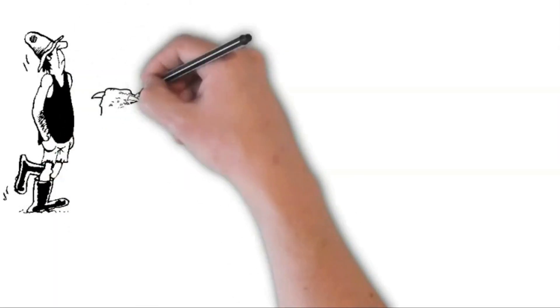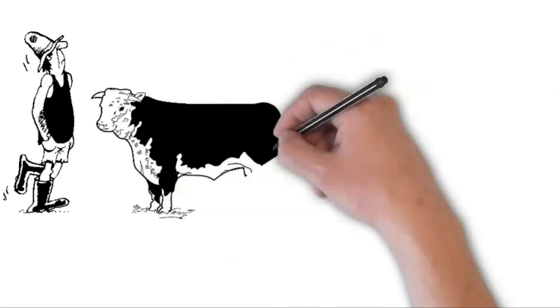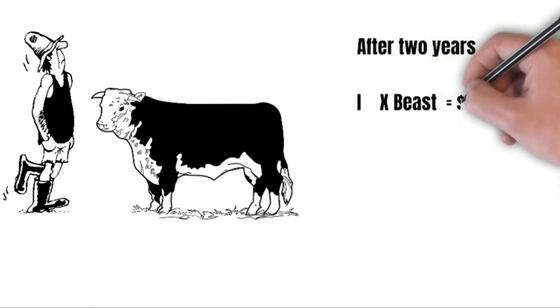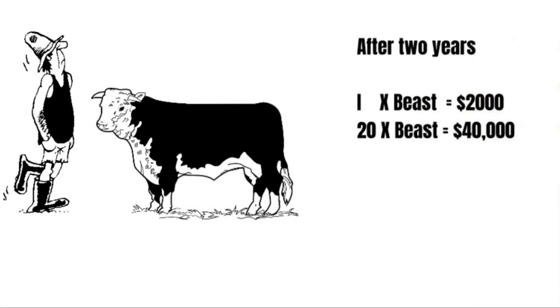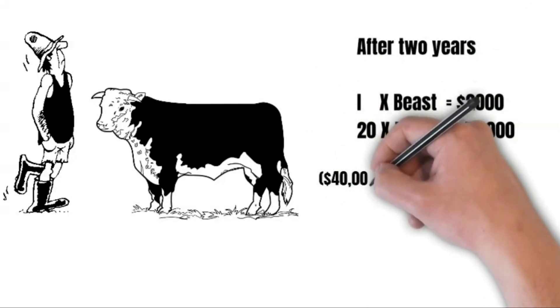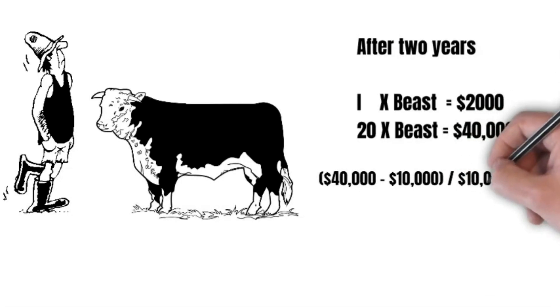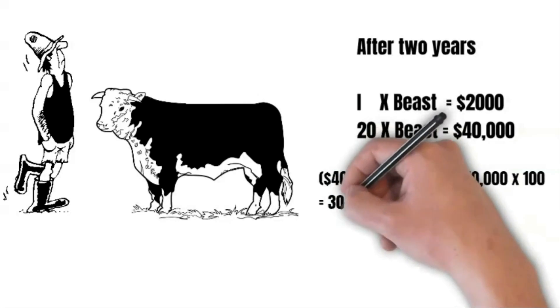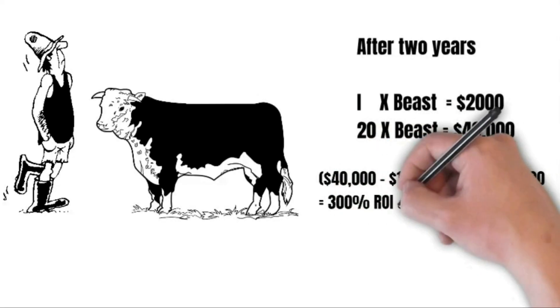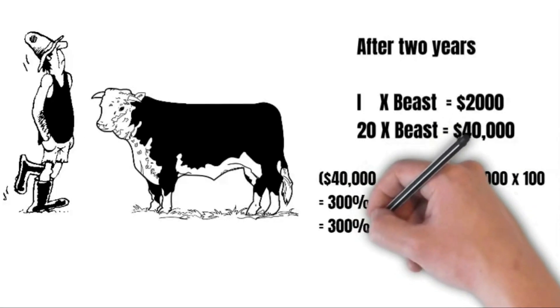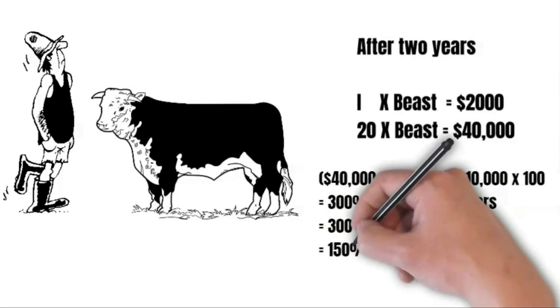Old Cooch has been moving these beefies around for the last two years, but when the time comes each one is worth $2,000. So that's 20 beasts at $2,000 each, giving Cooch a return of $40,000. Working out the return on investment: take $40,000, subtract the $10,000 initial investment, divide by $10,000, then multiply by 100. This gives a 300% return on investment over the two-year period, or 150% return on investment per annum.